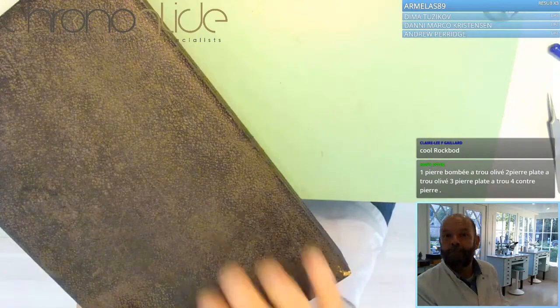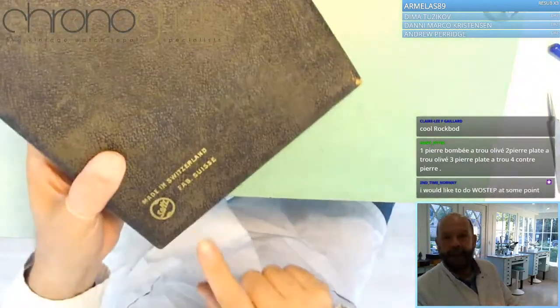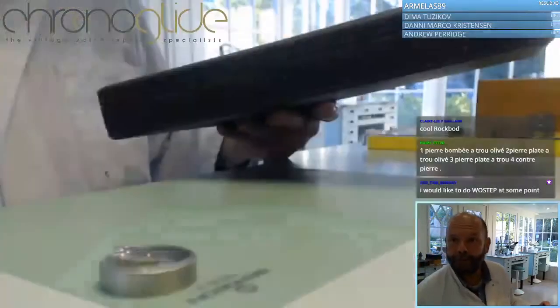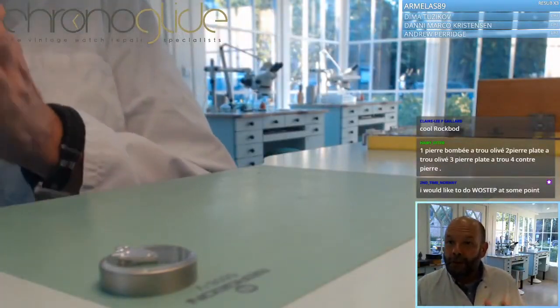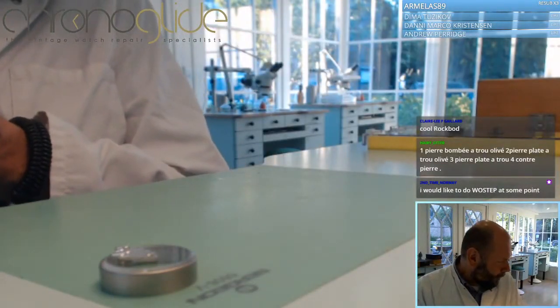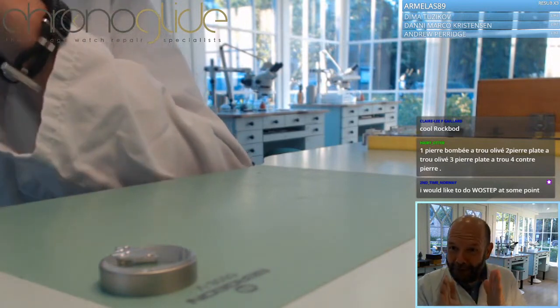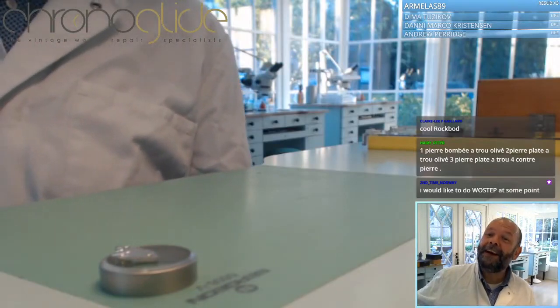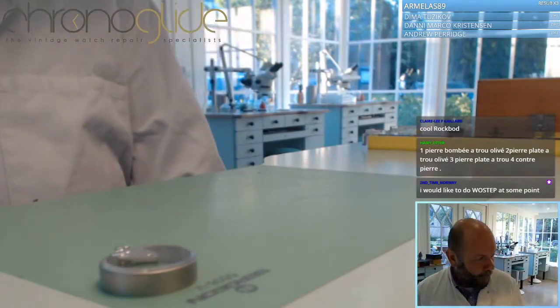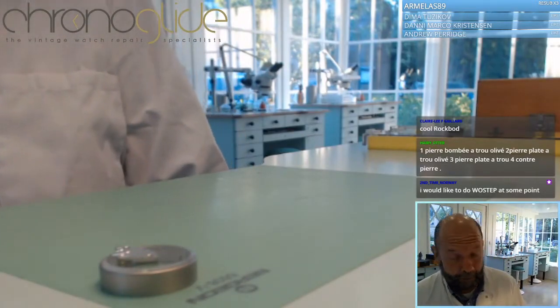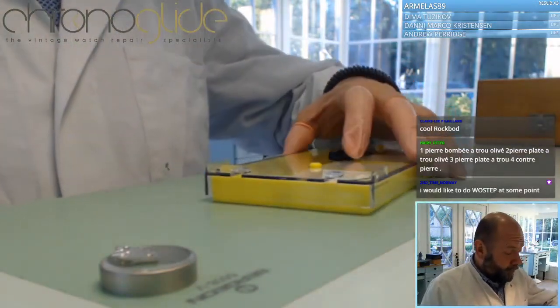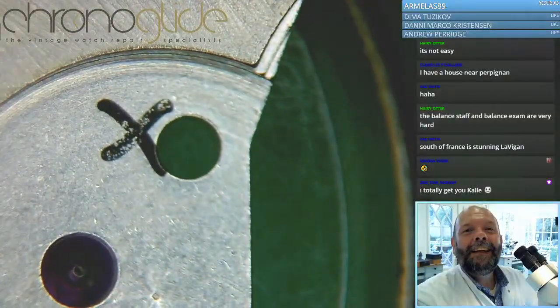You can see the size of the jewels. We know the shape, the outer diameter, the inner diameter, and how to find them in an assortment or you just order them. Then we have the jewel, and X marks the spot.